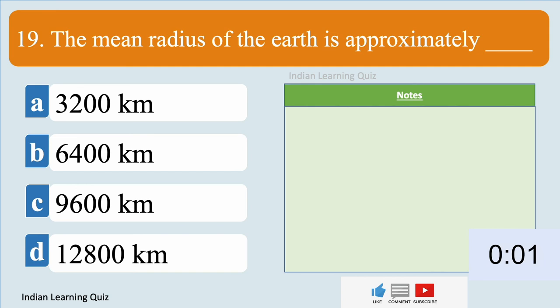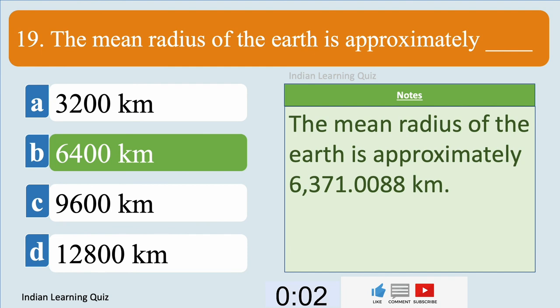The mean radius of the Earth is approximately 6,400 kilometers.